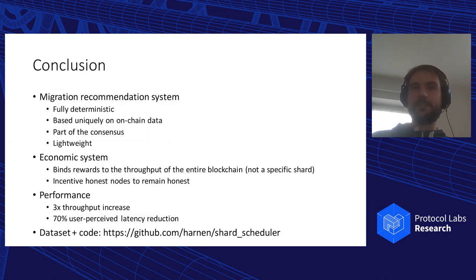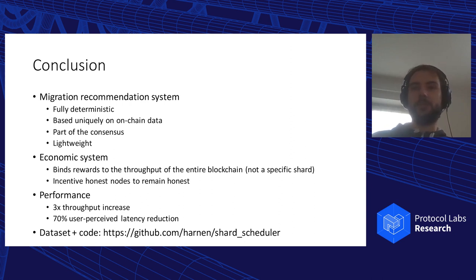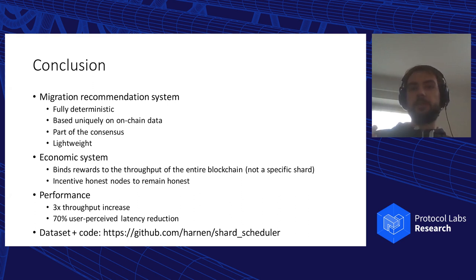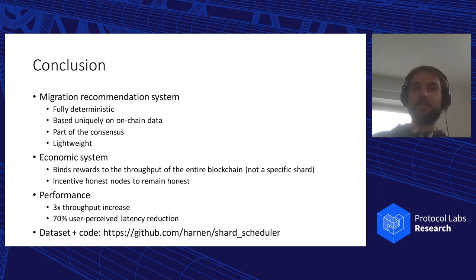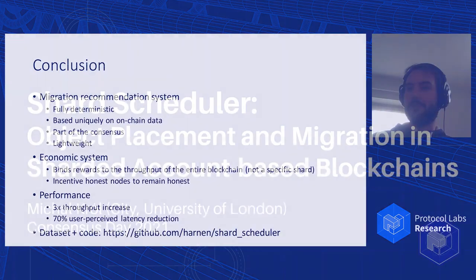To conclude, Shard Scheduler is a migration recommendation system that is fully deterministic, based uniquely on on-chain data, and can be part of the consensus protocol. Operations are very lightweight, so we don't introduce any significant overhead on top of regular transaction processing. We also proposed a new economic system that binds miner rewards to the throughput of the entire blockchain rather than a specific shard, which incentivizes honest nodes to remain honest and follow the consensus protocol. We observed up to three times throughput increase and up to 70% user-perceived latency reduction.